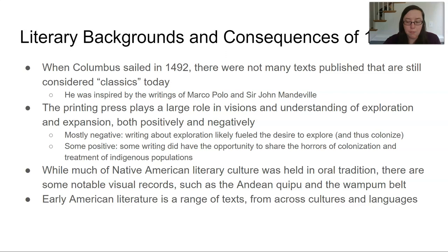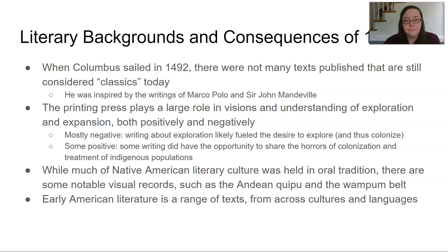As a whole, early American lit from this period — the beginnings until 1820 — is really a big range across cultures and languages. When we're talking about Native American writing, indigenous peoples' writing, the explorers, the settlers, the colonists, and writings from people who were enslaved, it's a huge expanse. And again, it ties back to this question of identity: what is the identity of American writing at this time? It really is so vast.